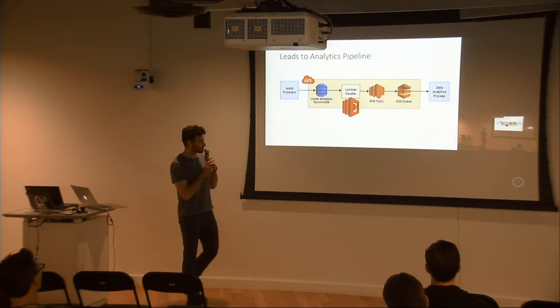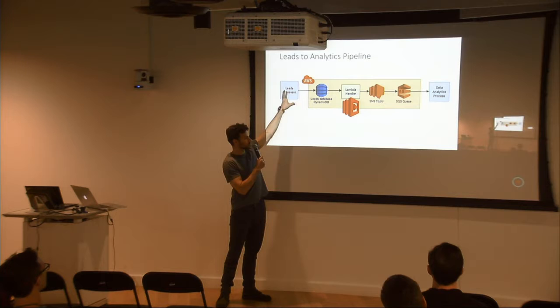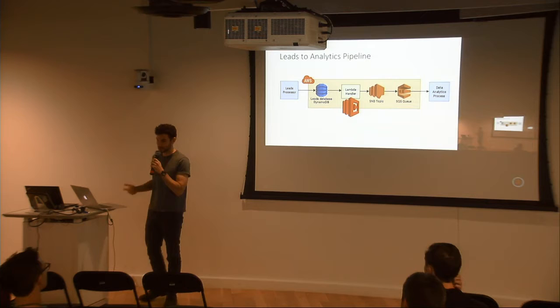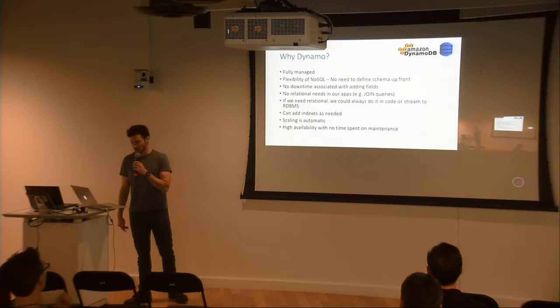This is the pipeline that we ended up building. You can see this is the leads processor from the previous slide. Our leads processor would send it over to Dynamo, and then DynamoDB would initiate a stream which would go into an SNS topic and then enqueue onto a queue where it gets dequeued by our analytics process.